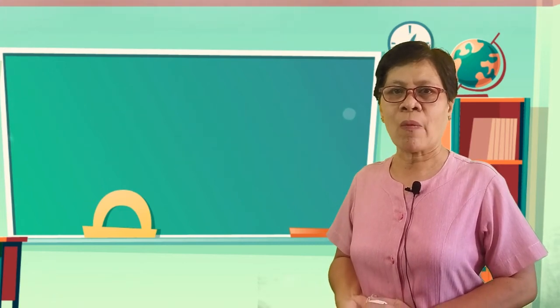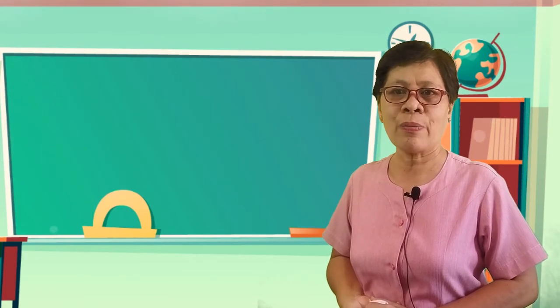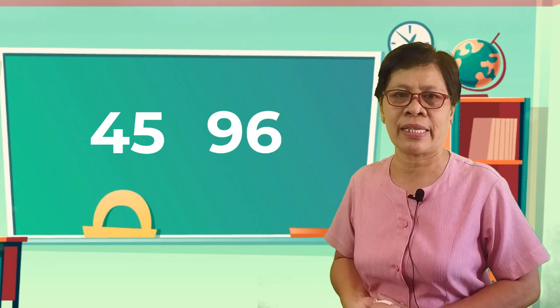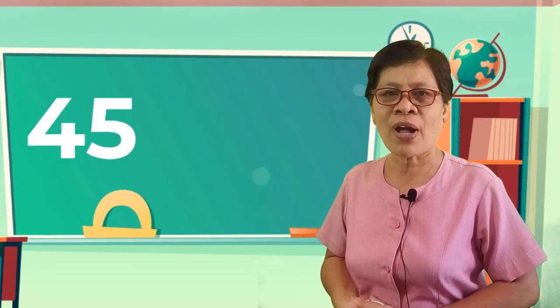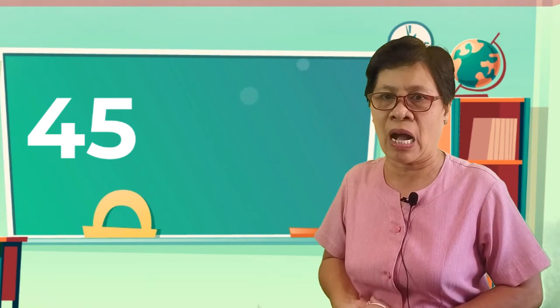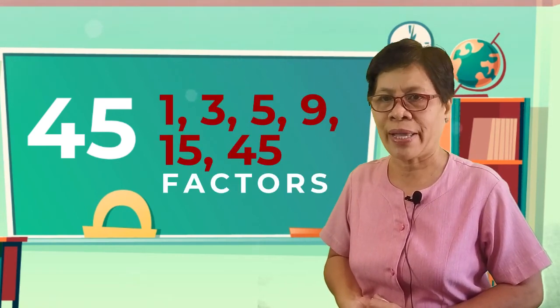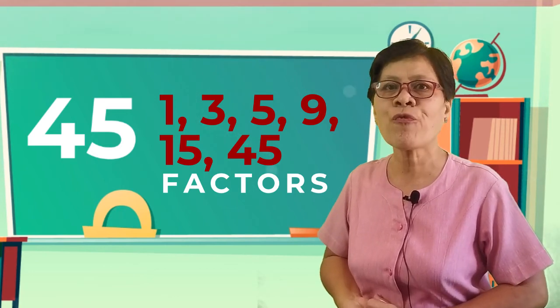Now, what are the composite numbers? So, we have 45 and 96. For 45, the factors of it are 1, 3, 5, 9, 15, and 45.